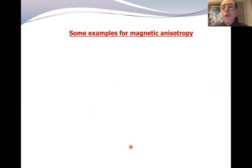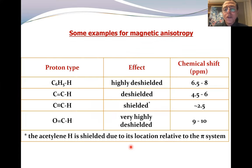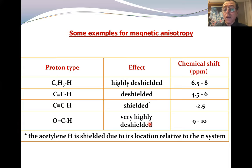Let us take an example. A benzene ring is highly deshielded. An aldehydic proton is even more highly deshielded, while in acetylenic systems the proton is shielded.